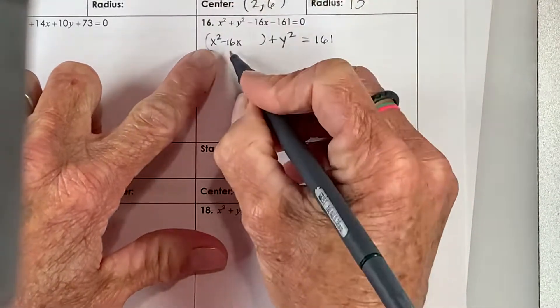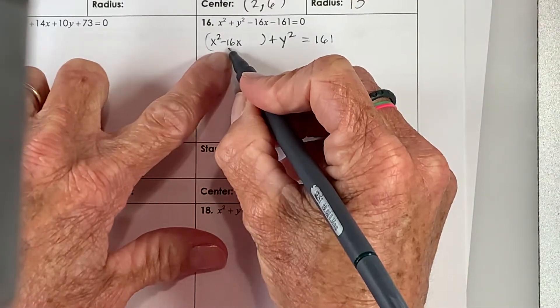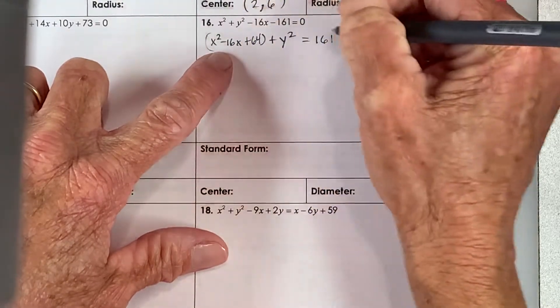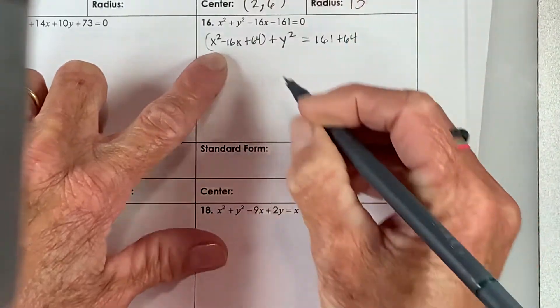This is a 1, so we can complete the square by taking half of this, negative 8, squaring that. That's positive 64. If I add 64 there, I need to add 64 over here.